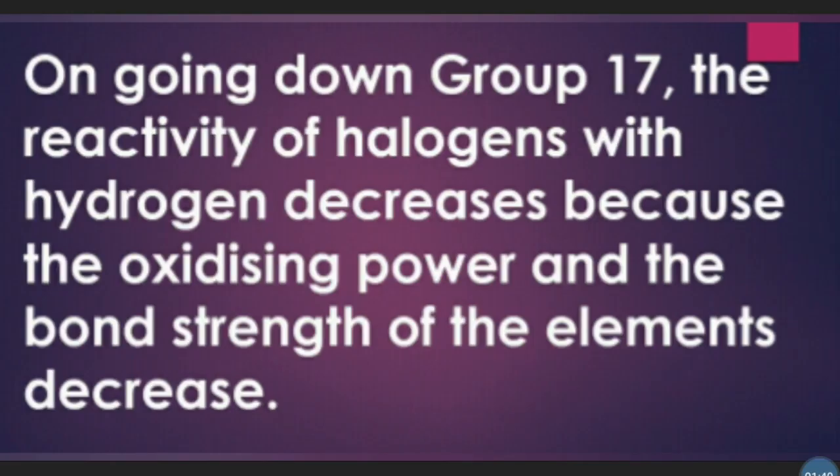On going down group 17, the reactivity of halogens with hydrogen decreases because the oxidizing power and the bond strength of the elements decrease.